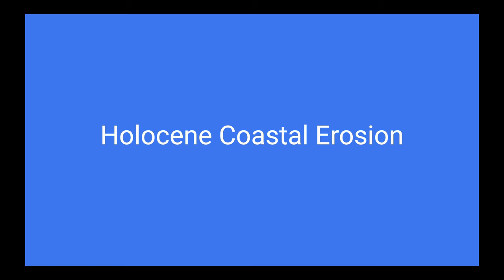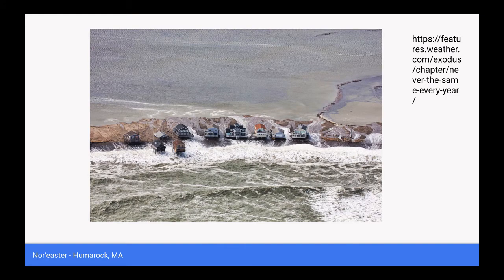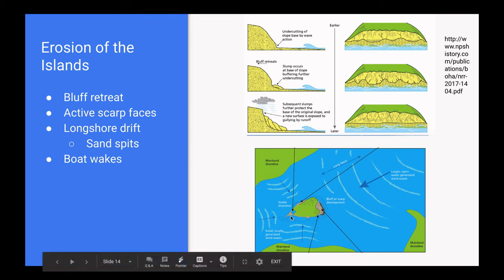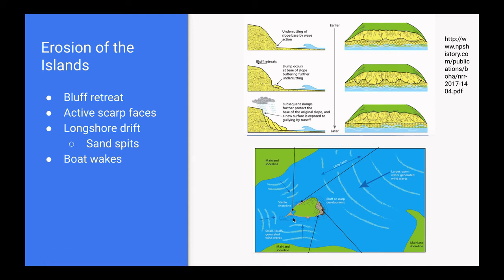The final geologic process is the coastal erosion of glacial material during the recent Holocene period. Boston Harbor is open to the northeast, and most of the storms that Boston gets are known as nor'easters, meaning that wind and surf prevail from the northeast. This photo here is of Humarock, Massachusetts, just south of Boston, and it really clearly shows the destructive erosional potential that these storms cause. Because the islands are composed mostly of loose glacial material, that makes them really susceptible to water-based erosion. When water from waves, currents, or tides is forced up against the sides of the islands, it gradually eats away at them, creating a retreating bluff and an active scarp face. This eroded sediment often travels along the island via longshore drift and creates sand spits along the island. Also in Boston, there's a lot of boat traffic, and their wakes contribute to this erosion.